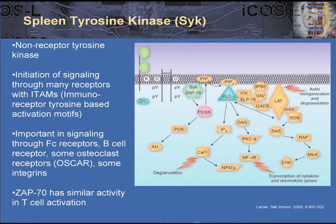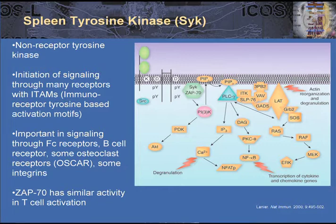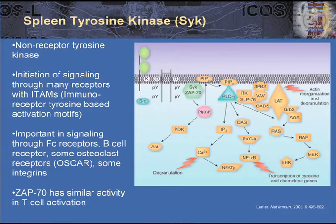Another important kinase is the spleen tyrosine kinase, or SYK, which is now the target of therapy for treatment of rheumatoid arthritis. This is part of a larger family of kinases, for which ZAP70 is also a member. ZAP70 is associated with T-cell signal transduction, but SYK is associated with many other forms of receptors, including FC receptors, the B-cell receptor, some receptors on osteoclasts, and integrin receptors. SYK, once phosphorylated, will initiate a series of downstream cascading events that can result in degranulation of a cell like a mast cell, signal transduction events, or changes in intracellular locomotion.